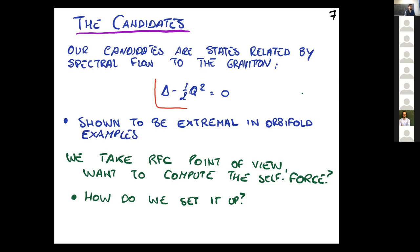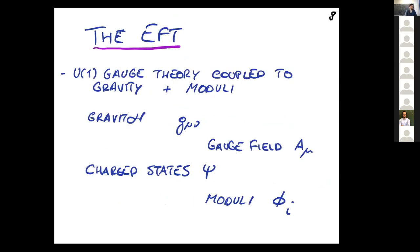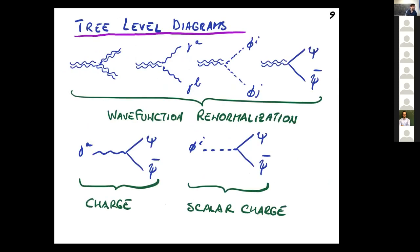Our point of view will be taking the RFC approach and seeing what we can say in a generic setup. How do we set it up? The idea is to study an effective field theory which is just a U(1) gauge theory coupled to gravity. The objects of interest are the graviton, gauge field, the charge states that will be our candidates, and moduli. At tree level, these are the interaction vertices we want to compute. The key object we are interested in is the bottom-right term, which essentially mediates interactions between moduli and these charge states.